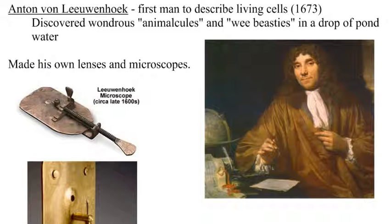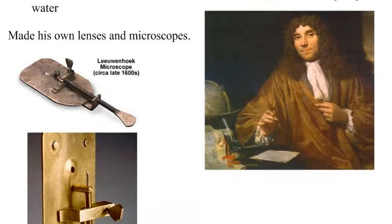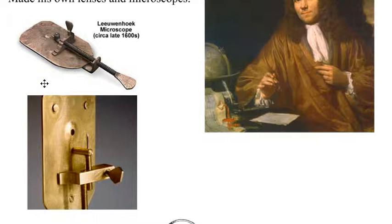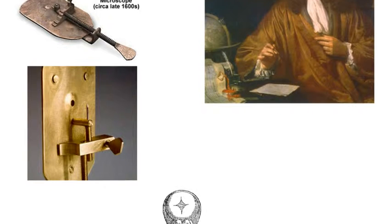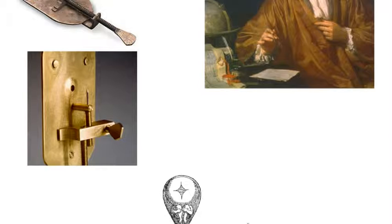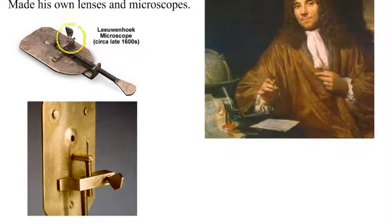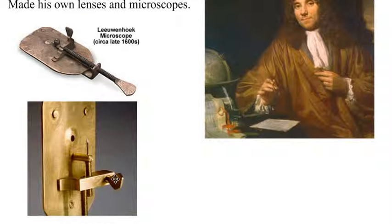He made his own microscopes, which is quite cool. Here's actually one of his actual microscopes. These were quite extraordinary — they had a single lens which he hand-ground, and this single lens could magnify up to 300 times. He created a focusing mechanism: this screw here would move the specimen up or down in the field of view, and this one down here would move it back and forth so he could focus.